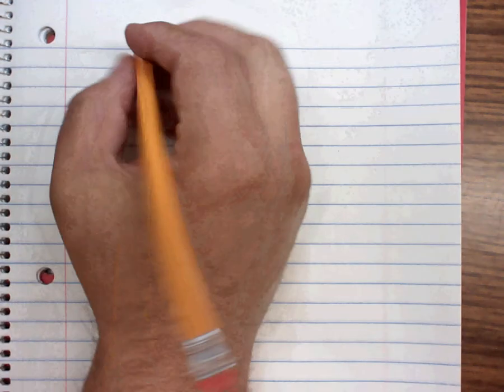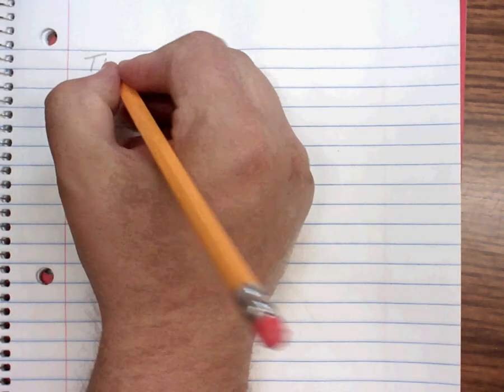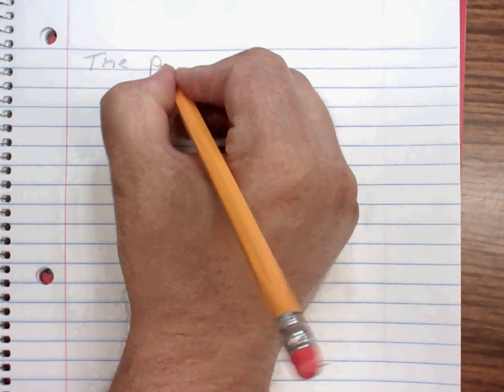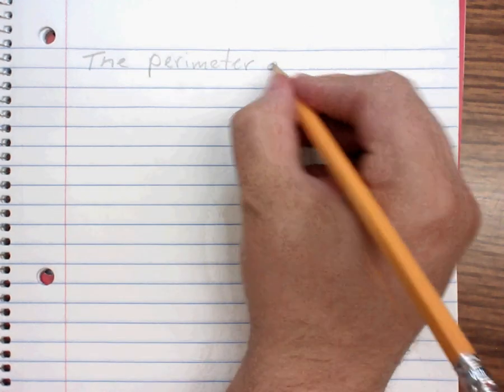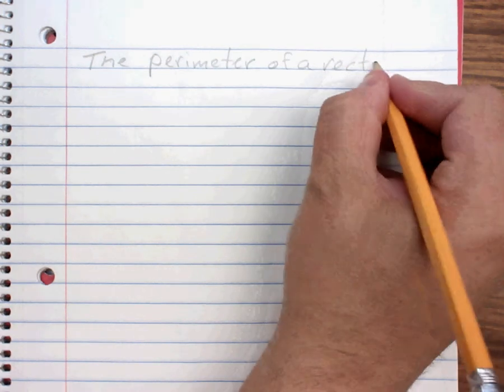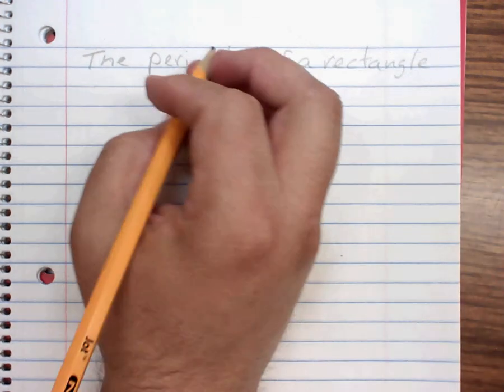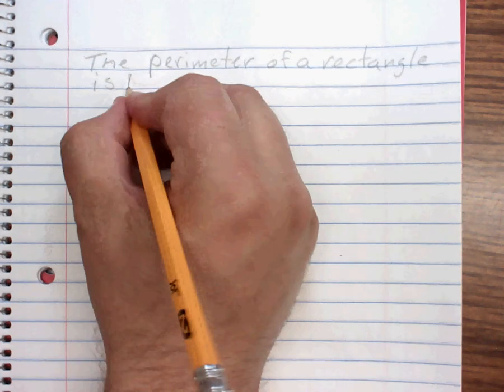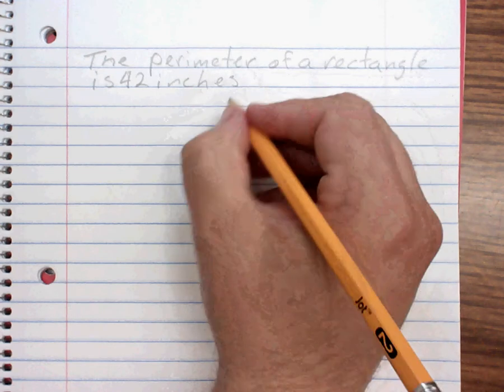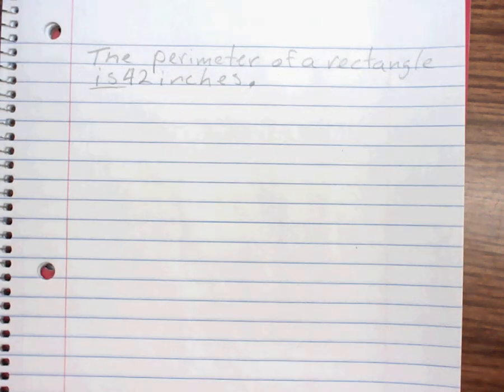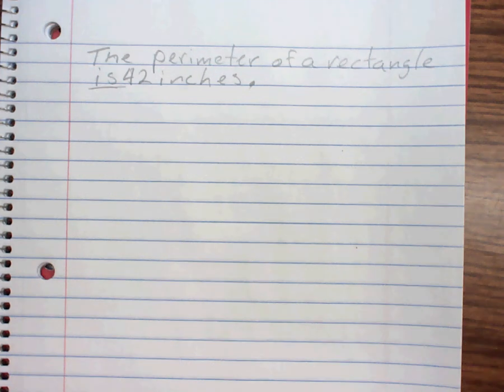All right. So it says that the perimeter of a rectangle is 42 inches. What did I say about the word is? Equals, right? So something equals 42. The perimeter of the rectangle equals 42. That's going to help us solve this problem.